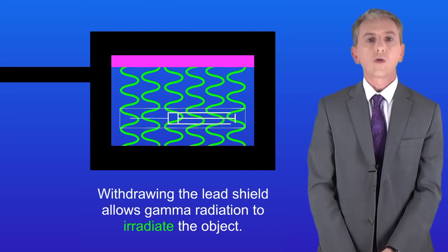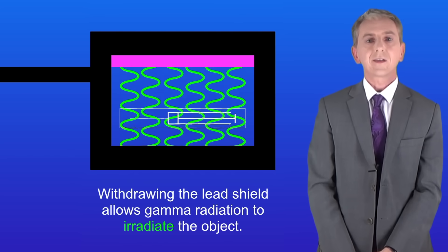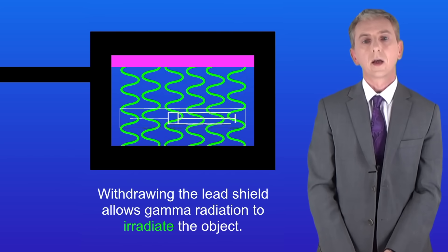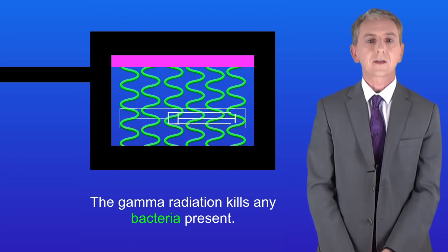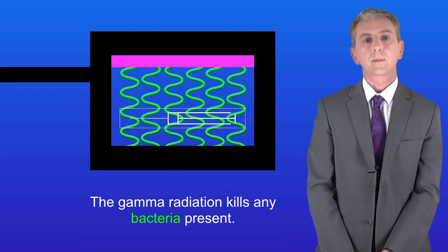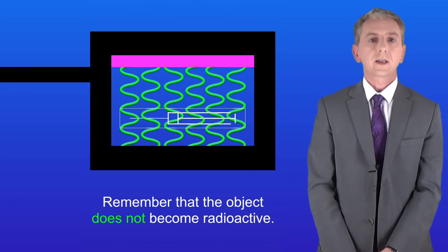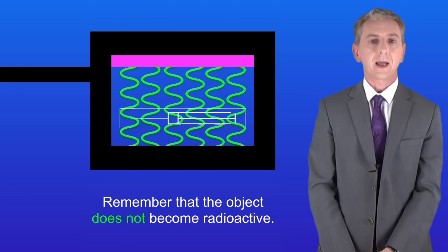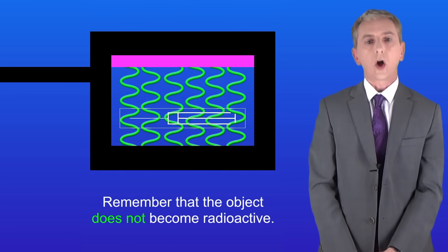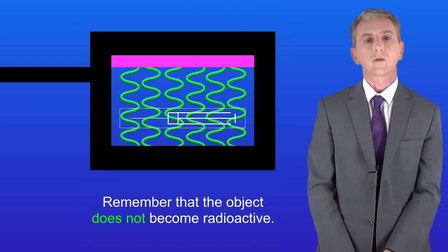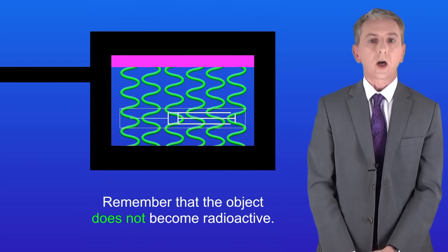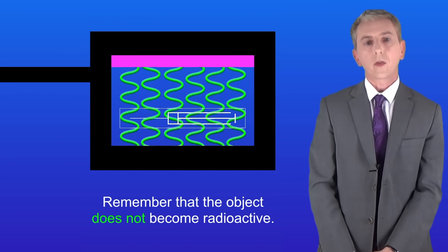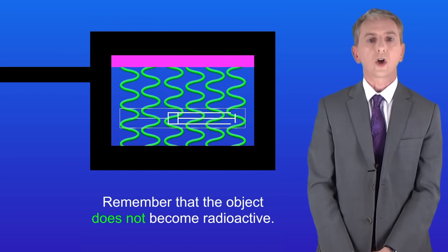When we withdraw the internal lead shield, this allows gamma radiation to irradiate the object. The gamma radiation kills any bacteria present. Now one key fact that you have to learn is that when an object is irradiated like this, the object does not become radioactive. That's because the object only comes in contact with the radiation but not the radioactive isotope itself.